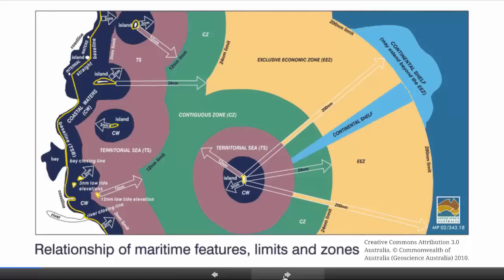Islands can generate a territorial sea, contiguous zone, and an exclusive economic zone, as well as the mainland. So over here we have baselines of the type we talked about last time — a bay forming internal waters — then a territorial sea, contiguous zone, and the exclusive economic zone. Coastal waters is an Australian legal concept we don't need to worry about. Because islands can project zones in all directions, you can have pockets of territorial sea off the coast of a state, and that's worth noting.